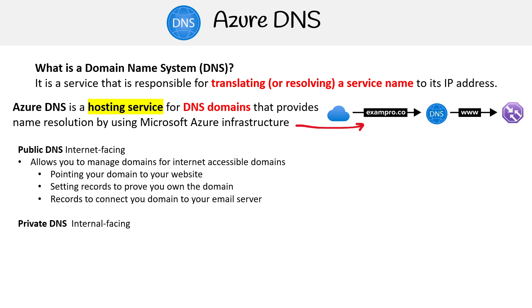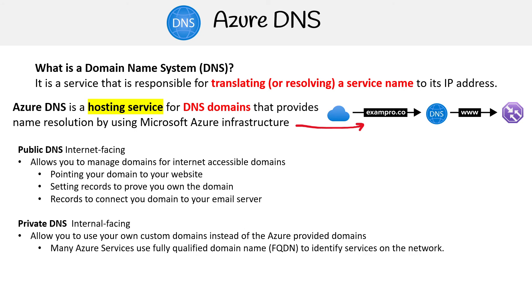Then you have private DNS, which is internal-facing. This allows you to use your own custom domain instead of the Azure provider domains. Azure has its own provider domains, which are fully qualified domains for a lot of services. A great example of this is Azure storage accounts — that link there is its fully qualified domain.